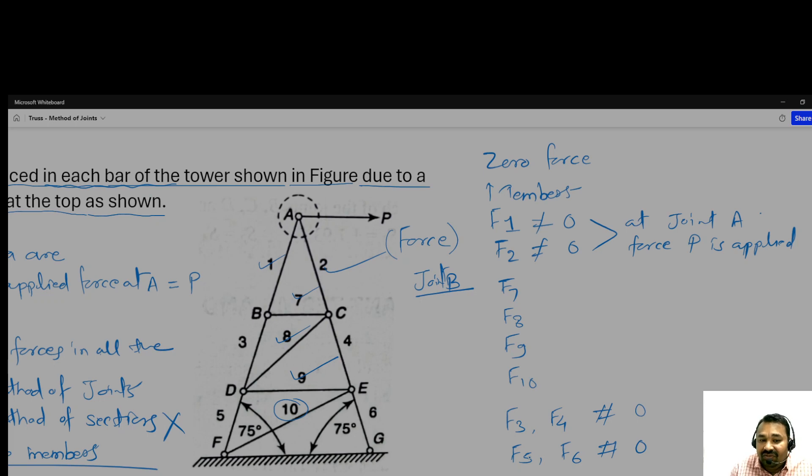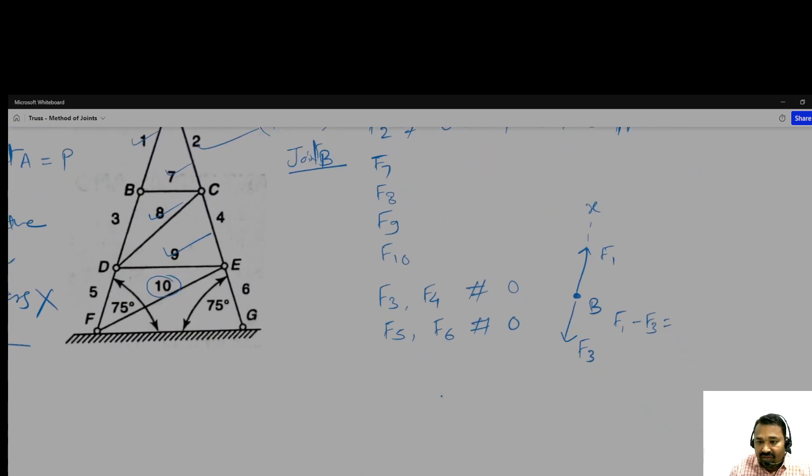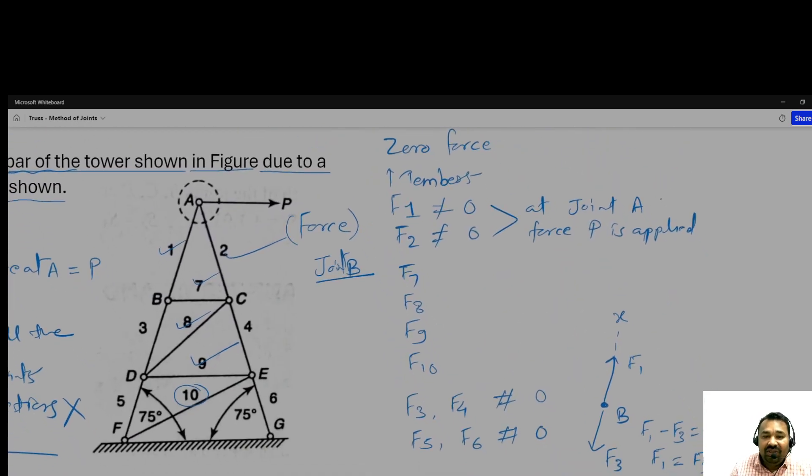Suppose this is joint B with F1 and F3. If this is the horizontal x-axis, what will be the equation? F1 minus F3 equals 0, means F1 equals F3. That is why six members are not zero force members.